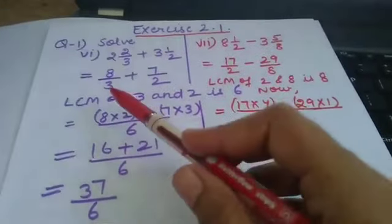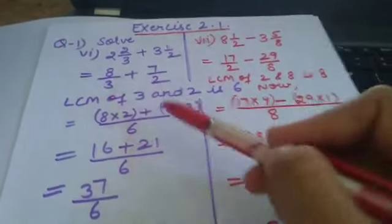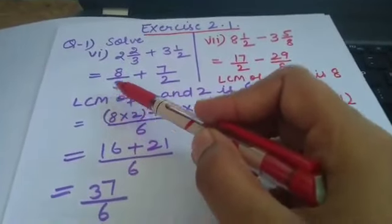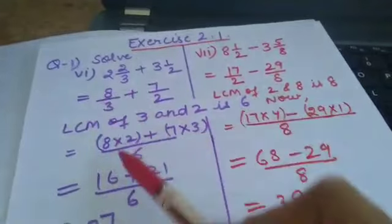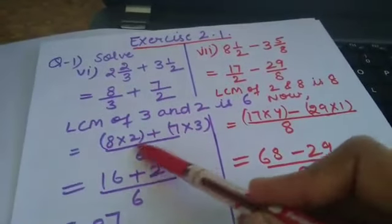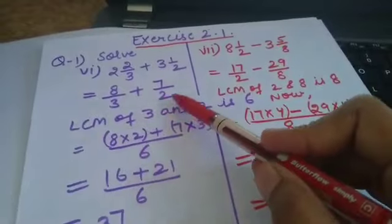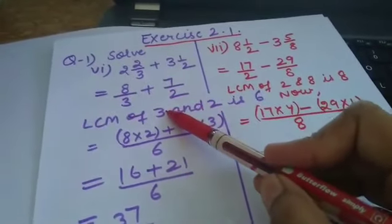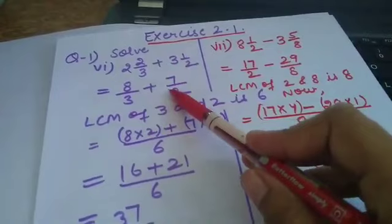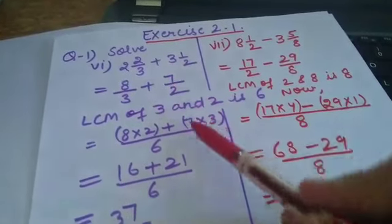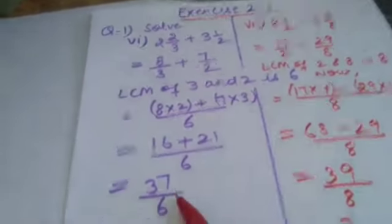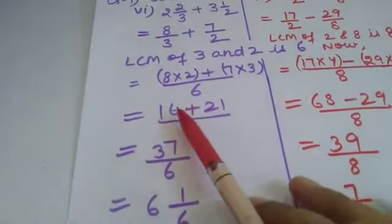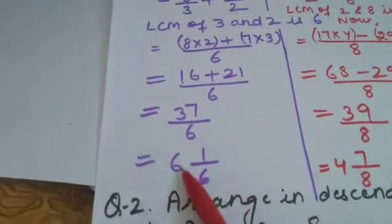With the LCM 6, divide it by each denominator. 6 divided by 3 gives 2, and 2 is multiplied with the numerator 8 to get 16. For the second fraction, the LCM 6 is divided by denominator 2 to get 3, and 3 is multiplied with numerator 7 to get 21. So it becomes 16 plus 21 over 6. That is 37 by 6. If you want to convert it to a mixed fraction, divide: the quotient is your whole number, the remainder is your numerator, and the divisor is your denominator.